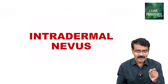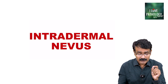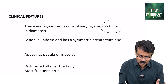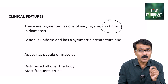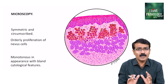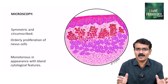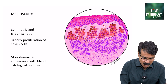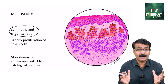The next important slide is intradermal nevus. What is an intradermal nevus? These are pigmented lesions of varying sizes, usually around 2 to 6 millimetres in diameter, with a very symmetric architecture. They usually appear as papules or macules. I will show you the illustration of intradermal nevus first, and then we will see the actual histopathologic image. This tumour is often circumscribed and symmetric in nature.